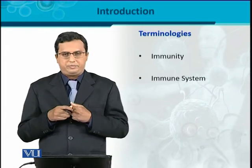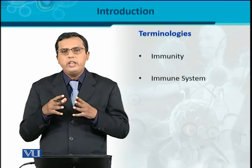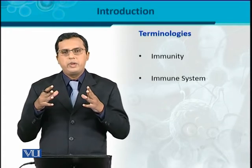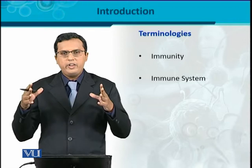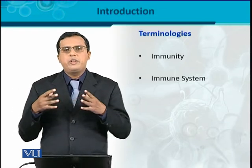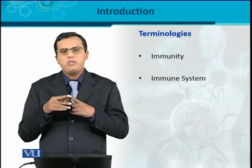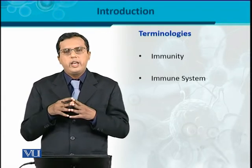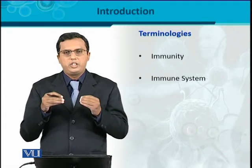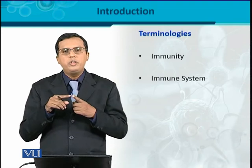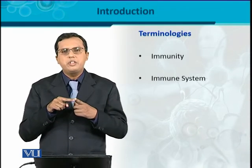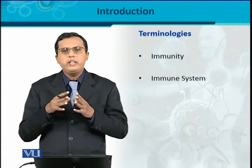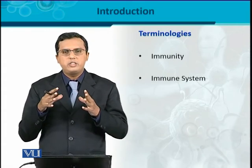Next is the immune system. The immune system is basically the collection of all the components. As you know, a system is made up of different components. In our body there are many systems comprised of organs, tissues, cells, and molecules. Similarly, the immune system is the collection of all immune tissues, immune cells, and secretory or immune molecules. All these things together form a system — a nizam — which we call the immune system.